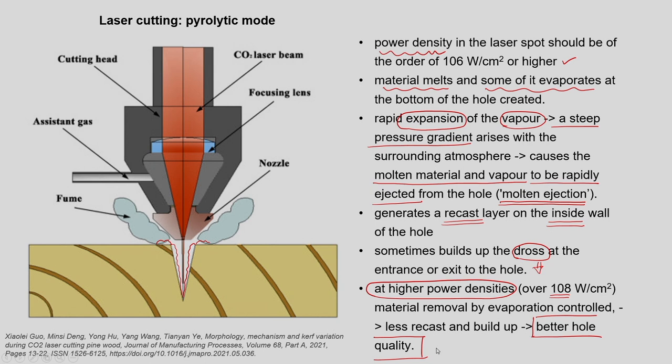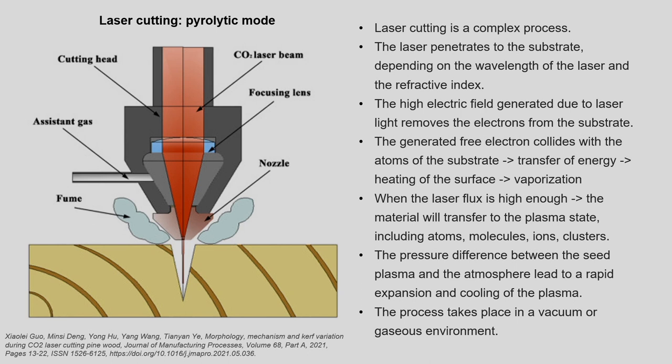So we can say that in the pyrolytic process we use the heat energy generated by the interaction of photons with the atoms of the workpiece material. Due to that we get the required melting and evaporation of the material, and in general this is used for the separation, removal, or parting of metals. Now let us understand how the laser is getting interacted with the substrate material.